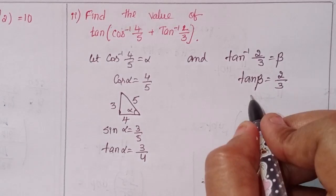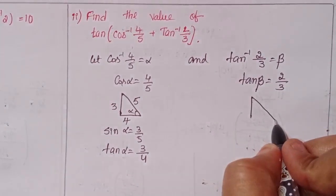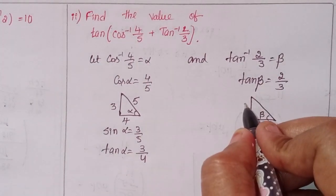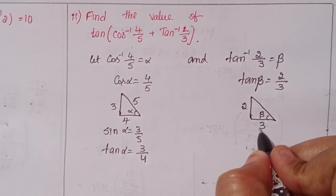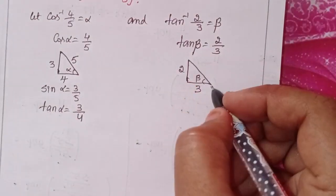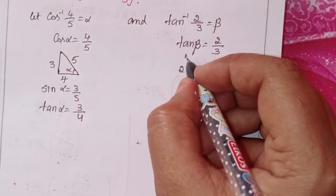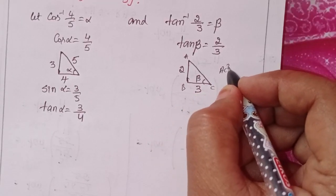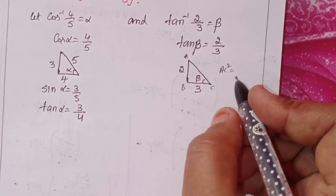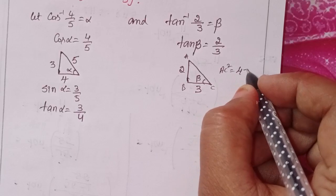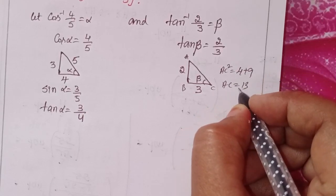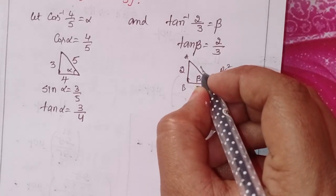Also, tan⁻¹(2/3) = β, so tan β = 2/3. Drawing the right angle triangle for β, opposite over adjacent. We need to find AC: AC² = 4 + 9 = 13, so AC = √13.